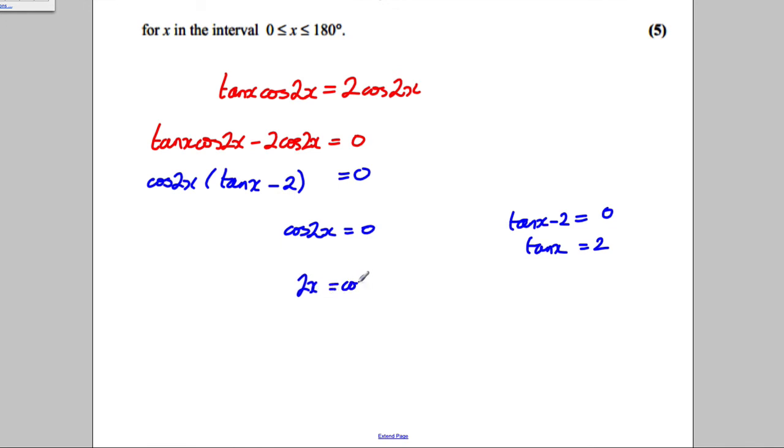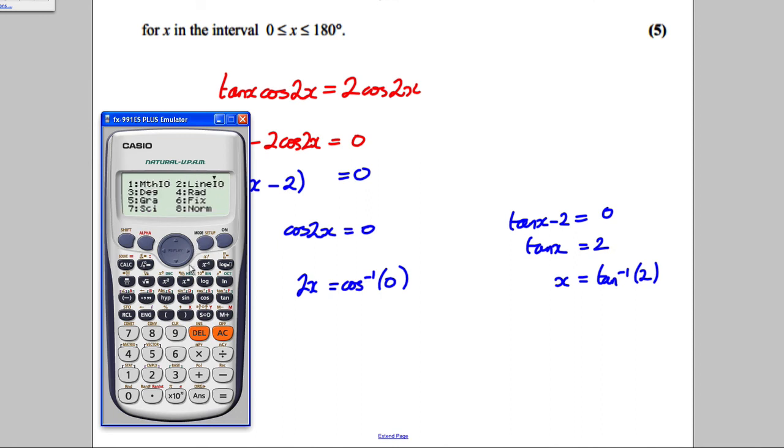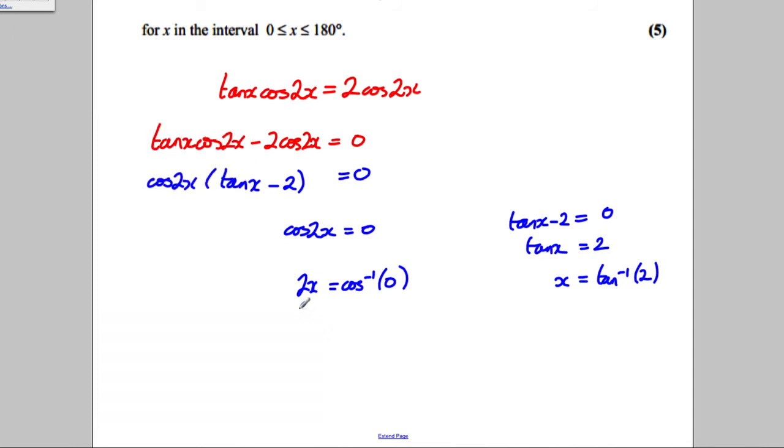2x is the inverse cos 0. And x here, single x, is going to be the inverse tan of 2. You're looking between 0 and 180. Calculator out. Make sure it's in degrees mode this time.